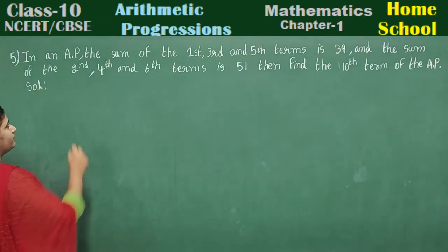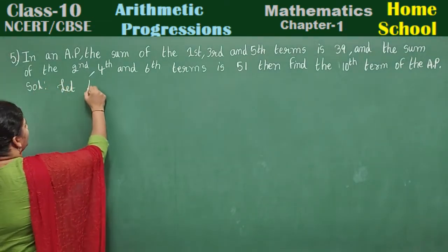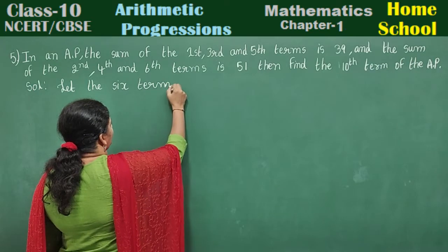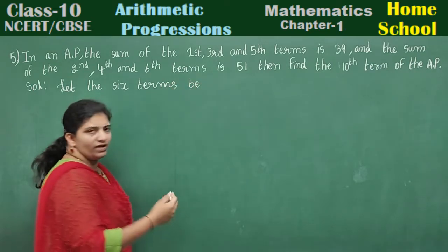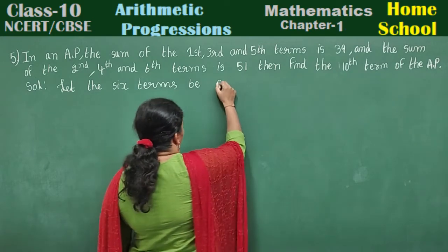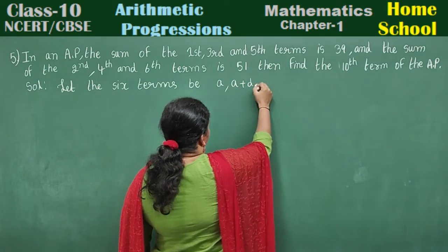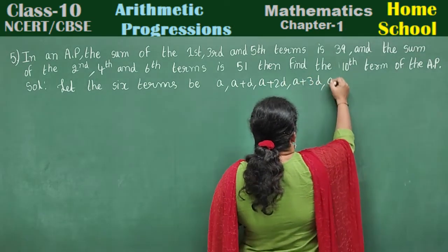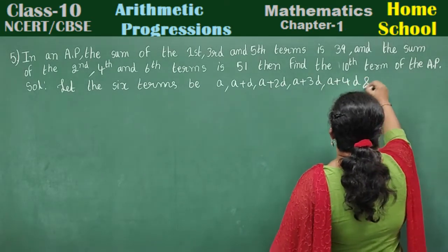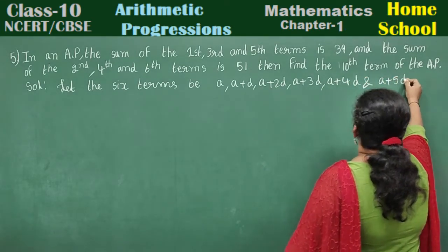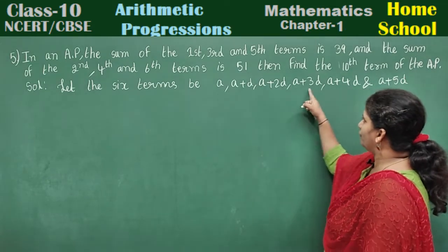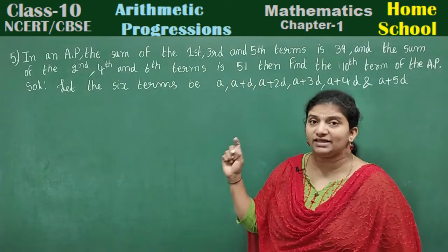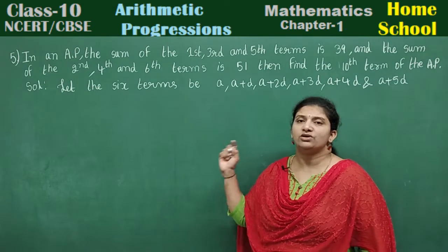Solution: Let the six terms be a, a plus d, a plus 2d, a plus 3d, a plus 4d, and a plus 5d. These are six terms of an AP.